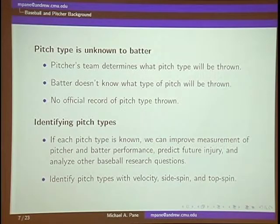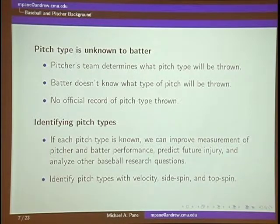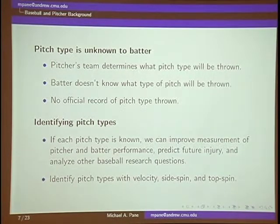In general, during a game the pitch type is unknown to the batter. The pitcher determines what pitch he's going to throw, and the batter doesn't know what's coming. As a result, there's no official record, at least publicly, of what actual pitch type was thrown. Our whole goal is to identify the pitch correctly. Why do we care? If we have improved data — knowing that's a fastball or a curveball — you can answer a lot of other baseball-related questions. The things the pitcher can control are the velocity of the pitch, the side spin which is horizontal movement, and the top spin which controls the vertical drop.